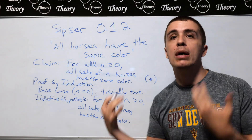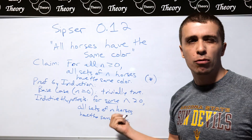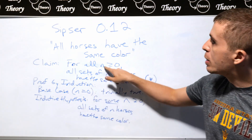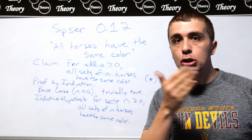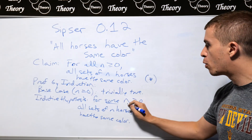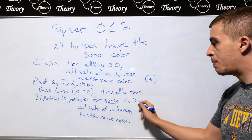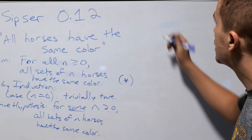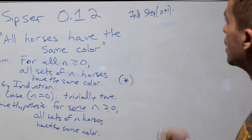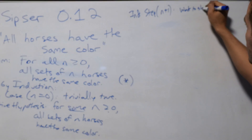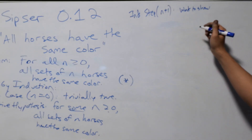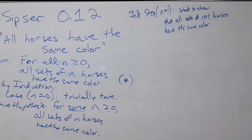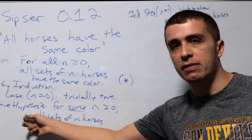When we have an inductive hypothesis, we want to prove it for the next step above n, which in this case is n plus 1. We're assuming for some value n — like 27, but it could be any n — that the claim is true, and then we want to prove it for n plus 1. So the inductive step is n plus 1. What we want to show is: all sets of n plus 1 horses have the same color. We need to actually prove it using the inductive hypothesis.